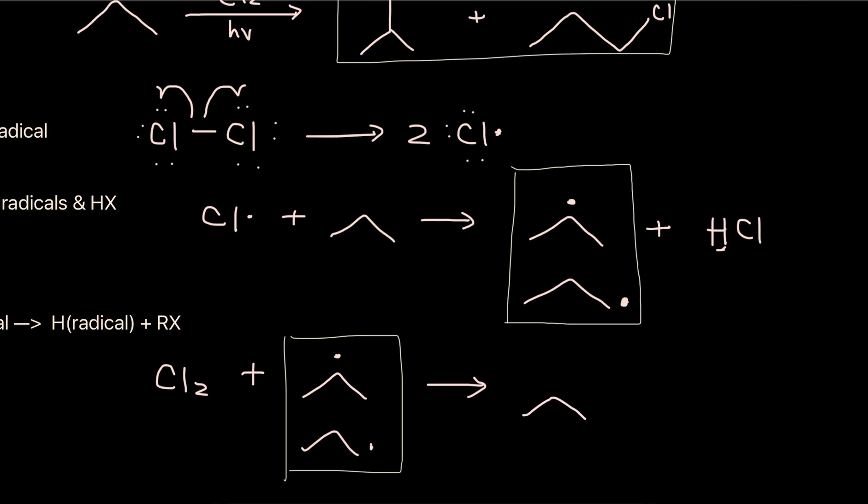And obviously, the chlorine's going to go on where the radical was. And also, you will produce the chlorine as a radical. Because there are two chlorines, so one goes on one of these chains, and the other one becomes a radical again.